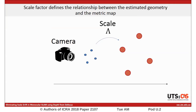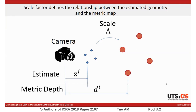During SLAM, the scale which defines the relationship between the estimated geometry and the metric map should stay constant. However, monocular SLAM suffers from scale drift, which means scale is gradually changing while mapping.